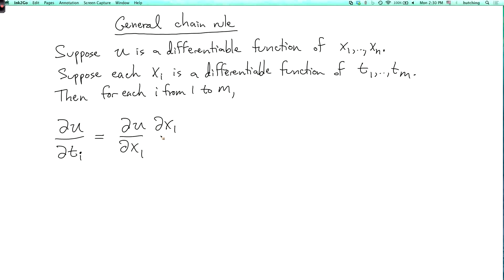times the partial derivative of x1 with respect to ti, plus partial derivative of u with respect to x2, partial x2 partial ti, up to partial u partial xn partial ti.